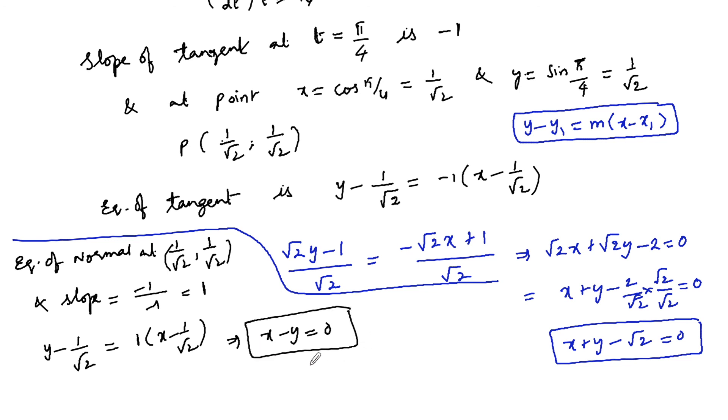So x minus y equals 0 is the equation of the normal, and x plus y minus root 2 equals 0 is the equation of the tangent.